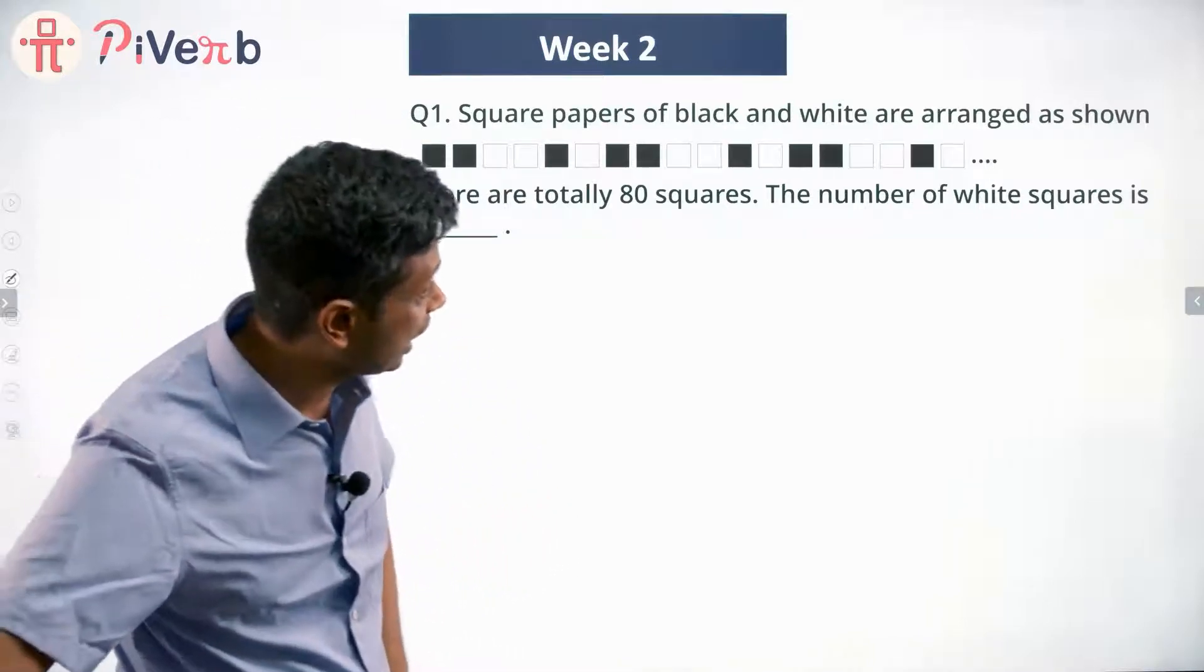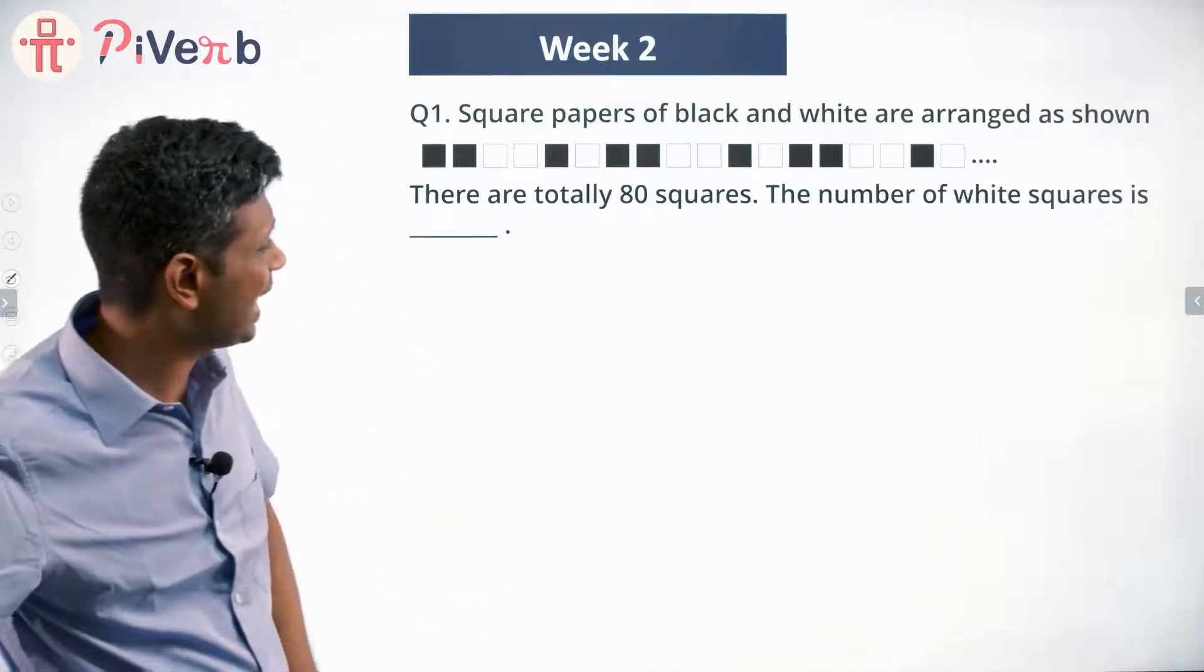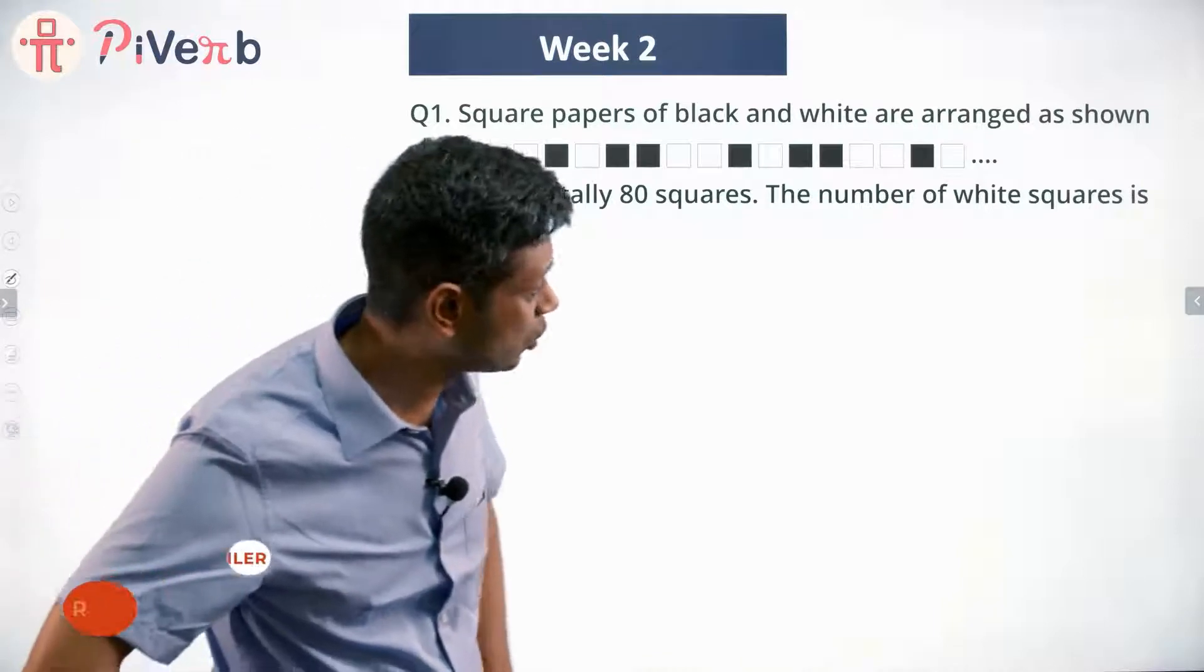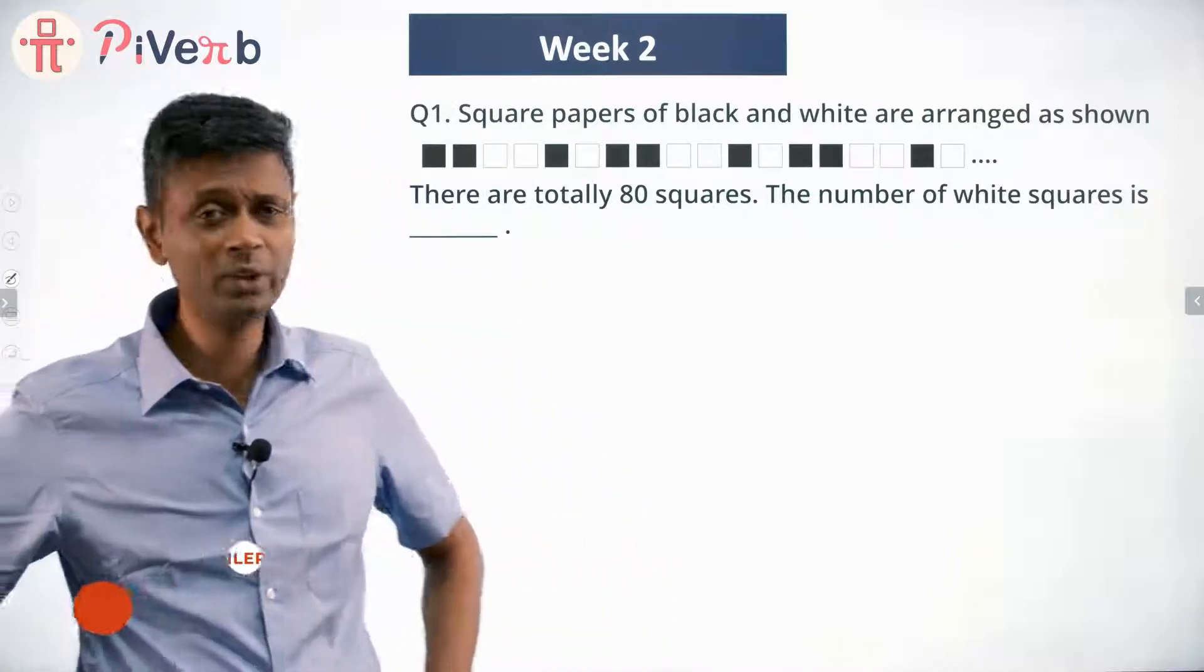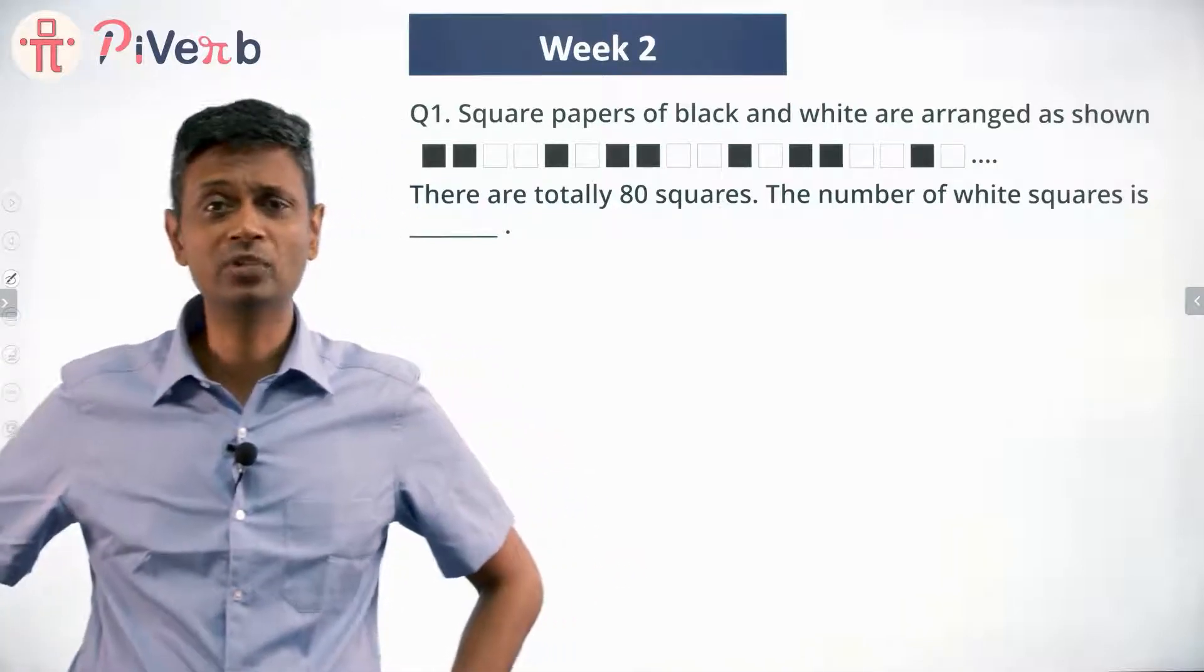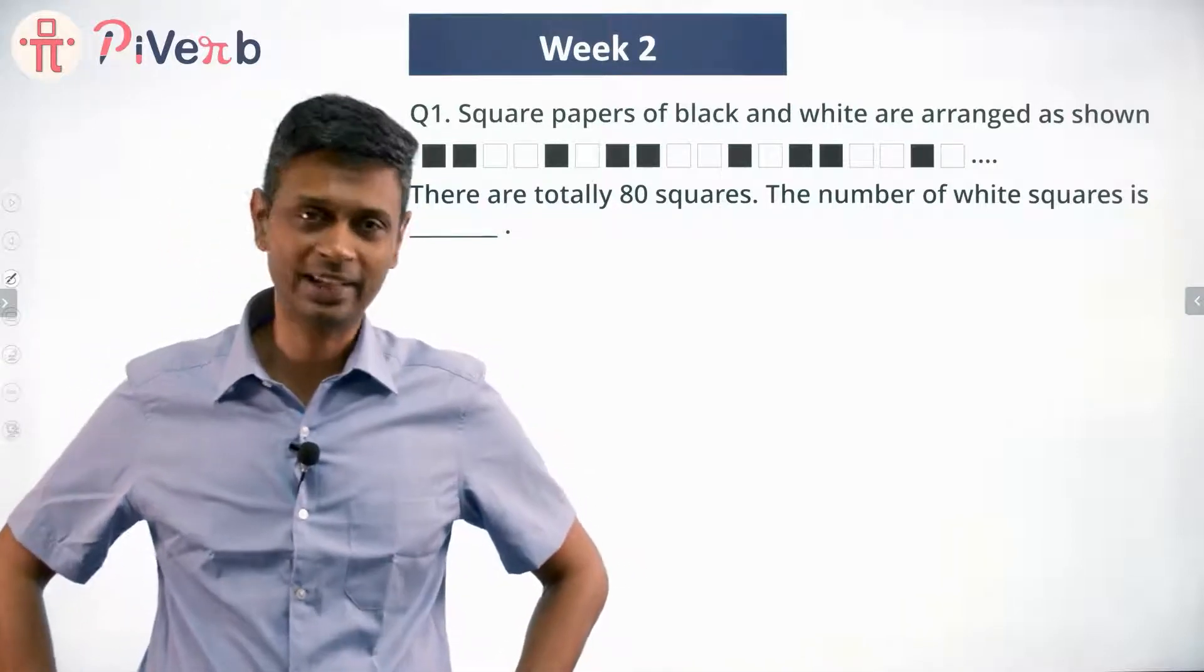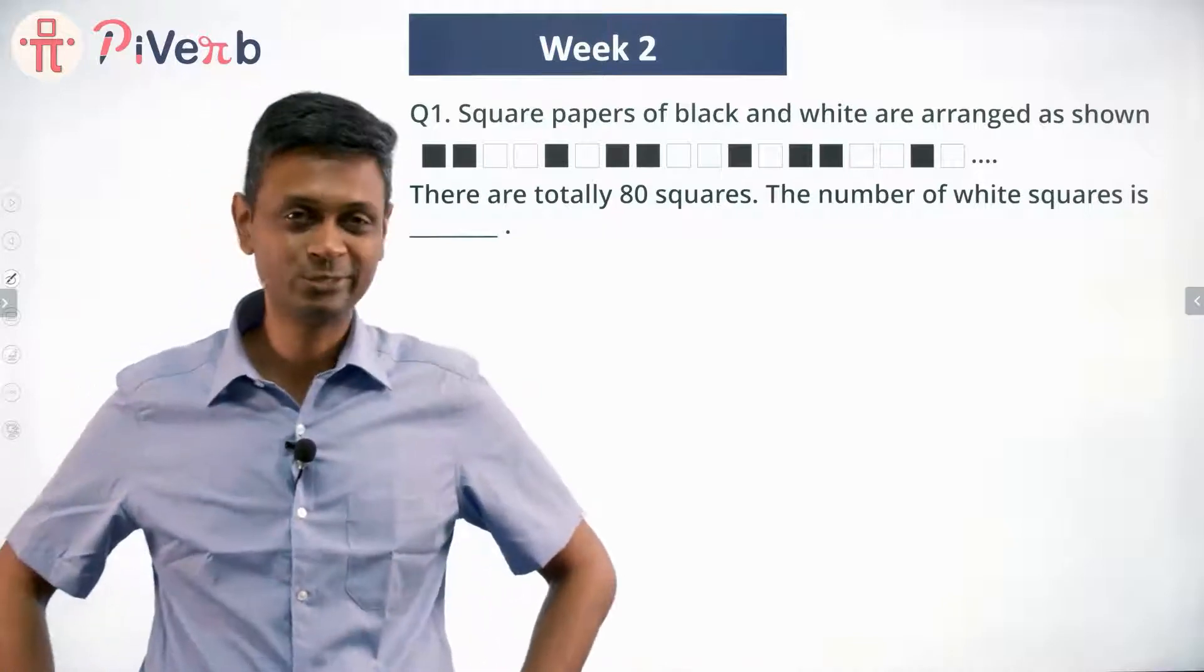Square papers of black and white are arranged as shown. There are totally 80 squares. The number of white squares is... This is a very interesting question. I like this question because you don't need any heavy math to solve it. Just think about it, apply yourself, and you can get the answer.